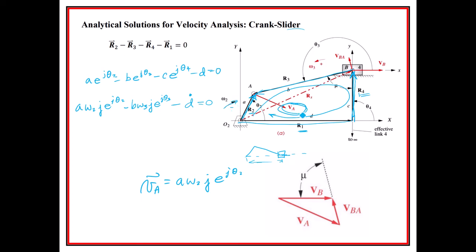Except that they drew it for some reason with a negative. I guess it just looked good to them. They drew this with a negative omega, just be aware of that. Then the velocity of A with respect to B here is going to be equal to b*omega3*j*e^(j*theta3), but the one that we know is the velocity of B, which is going to be equal to d dot.